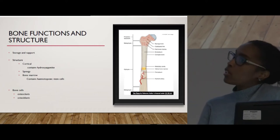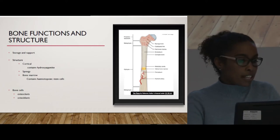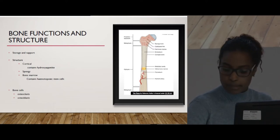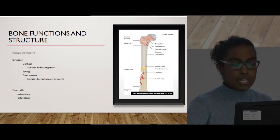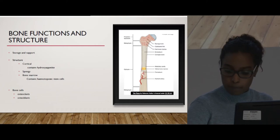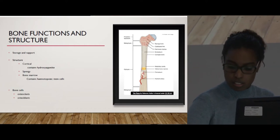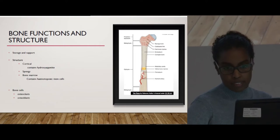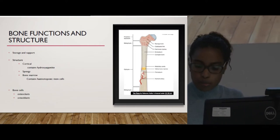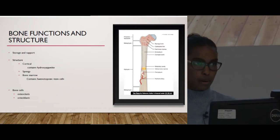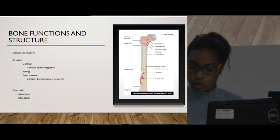The main functions and structure of bone: bone supports our mobility, protects our vital organs, and is the main storage component for our calcium and our phosphate. It also houses the bone marrow, which is important in the development of our hemopoietic cells. In terms of structure, you have an outer periosteum, which mainly provides support, and then the inner cellular layer that eventually gives rise to all the bone cells — our osteoclasts and osteoblasts.